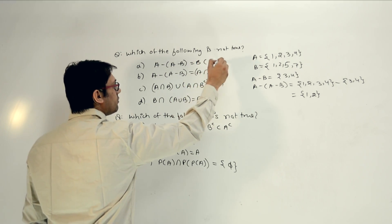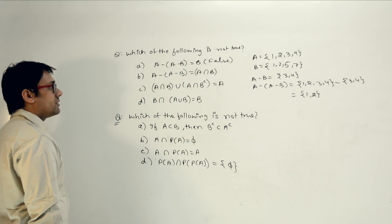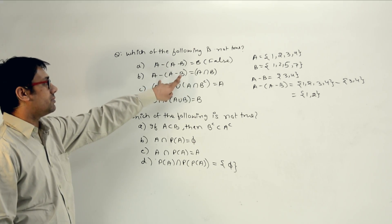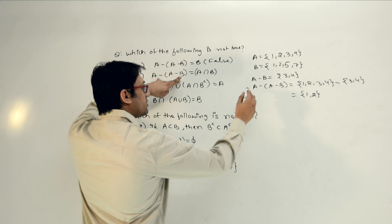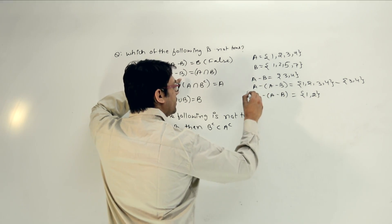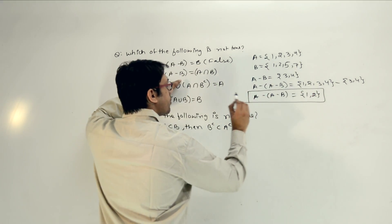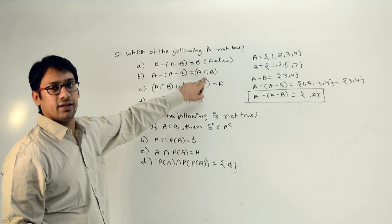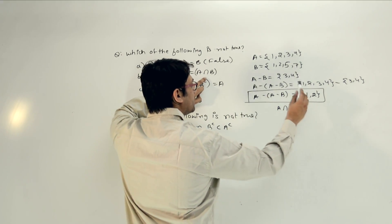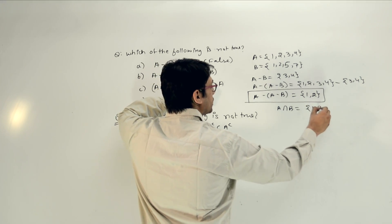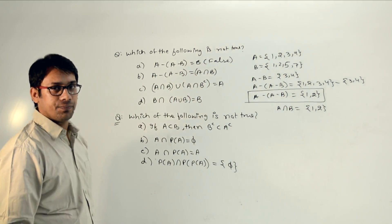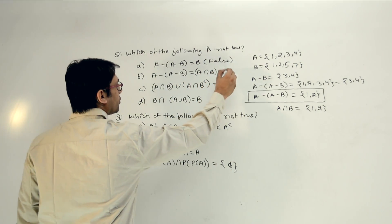Now let us look at the second statement: Is A minus (A minus B) equal to A intersection B? We already know A minus (A minus B) gives {1, 2}. Now A intersection B — the values present in both A and B — also gives {1, 2}. Therefore this statement is true.